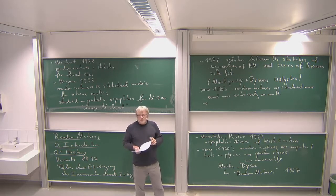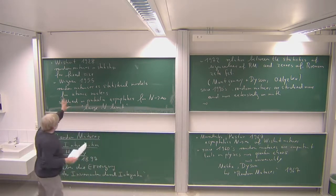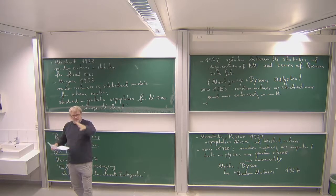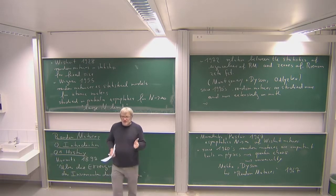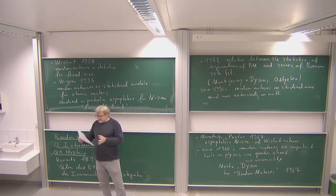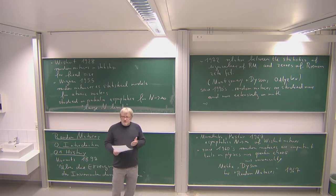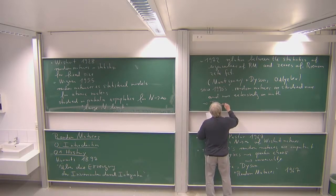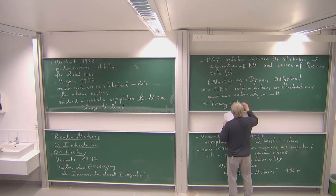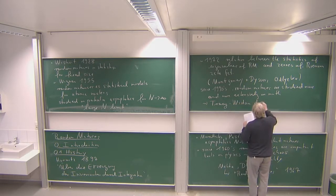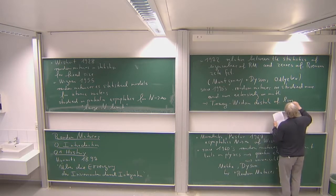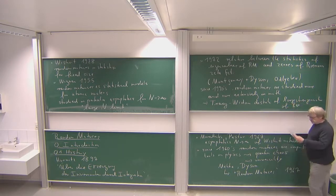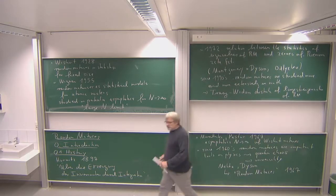There are many different things — not just the relation with the Riemann zeta function. One very prominent result is the distribution of the largest eigenvalue. The results of Wigner and Marchenko-Pastur are more about the average behavior of all eigenvalues, but one can also ask: what is the largest eigenvalue of a random matrix? This is what is now called the Tracy-Widom distribution — they looked at this and there's a famous result giving a specific distribution, now called the Tracy-Widom distribution of the largest eigenvalue of random matrices.